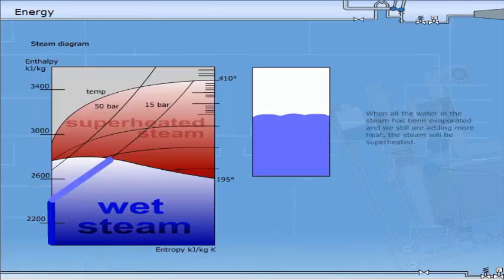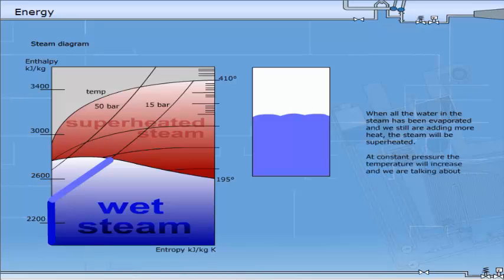When all the water in the steam has been evaporated, and we still are adding more heat, the steam will be superheated. At constant pressure, the temperature will increase, and we are talking about degree of superheating.